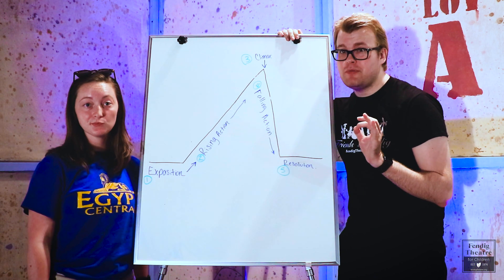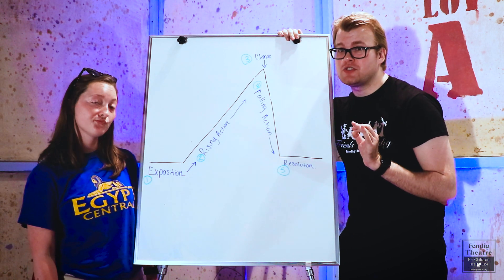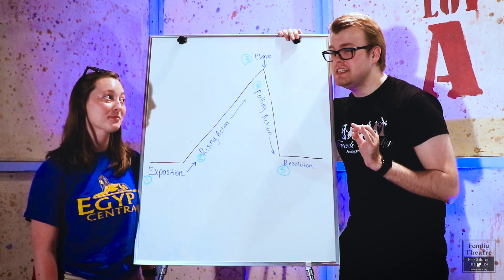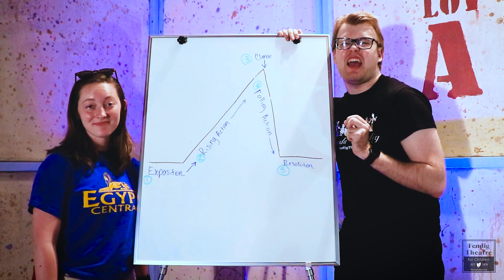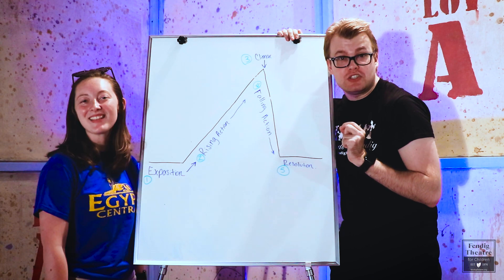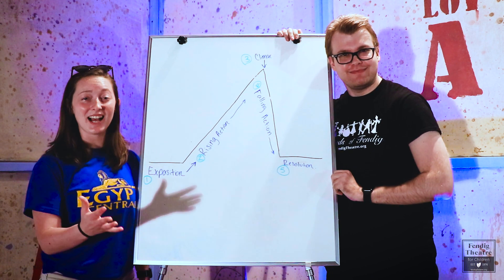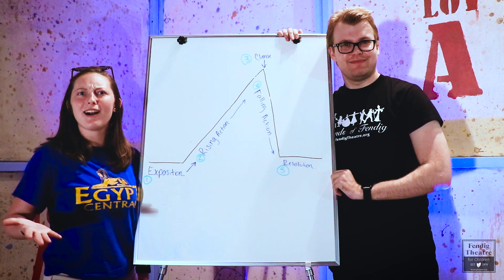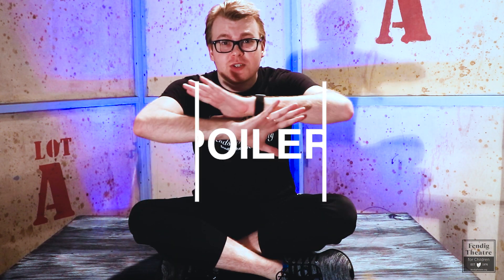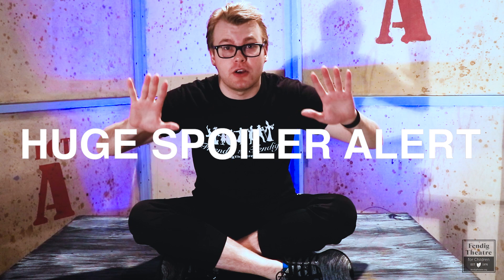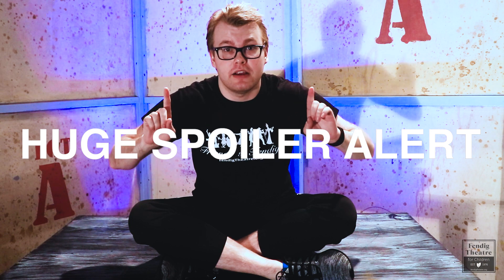This anchor chart shows each step of a story structure. And to define each step, we're going to use the story of Disney's Beauty and the Beast. If you would like to listen to the cast recording, click on the link below. Before we get started with all the learning and stuff, I just want to place a huge spoiler alert right here.